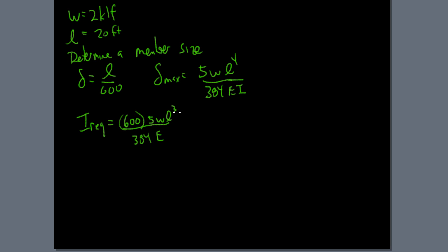Which means that if you solve all these things out, you can solve for an I required being equal to 600 times 5WL to the third over 384. Again, consistent units means that you're going to want to go here from 2 kips per lineal foot to kips per lineal inch and from feet to inches. This one is easy enough, 240 inches.